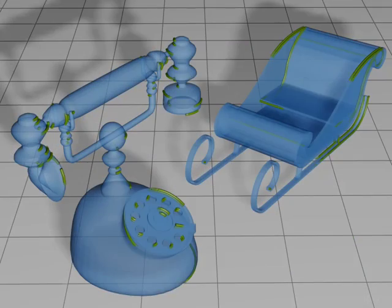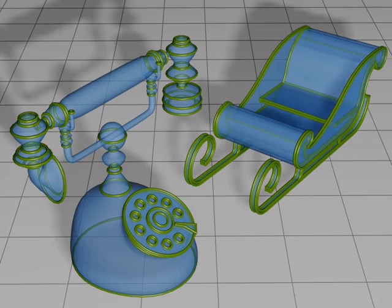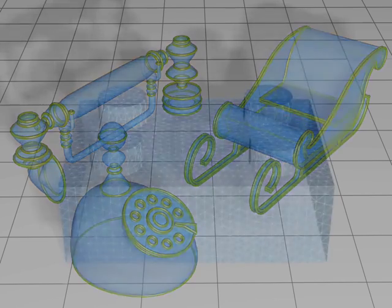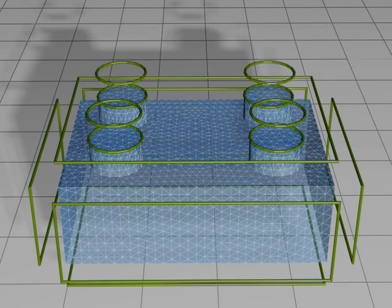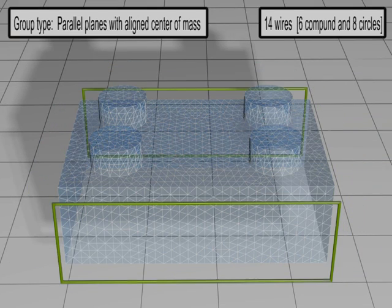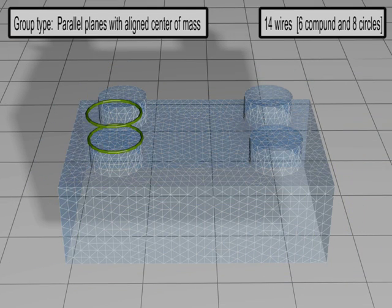To extract the wires, we identify mesh edges that have sharp dihedral angles or lie on the boundary and then use a tracing procedure to form the wires. We analyze the object to identify the characteristics of the individual wires and learn their mutual relationships.